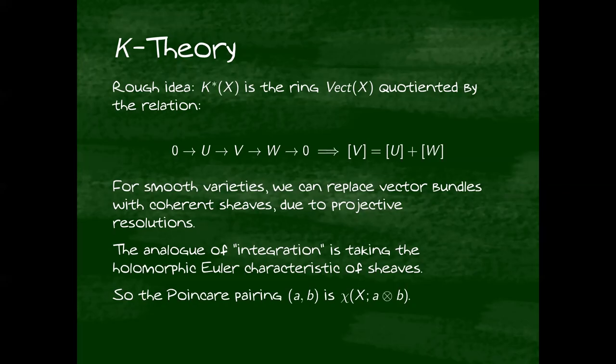That means the Poincaré pairing can be written as the holomorphic Euler characteristic of the tensor products in the same way that you can write it by integration in cohomology. For those already familiar with K-theory, I have omitted some things. This doesn't make the distinction between algebraic or topological K-theory, and I've only really defined K_0. But for all of the spaces we're considering, flag varieties, these distinctions do not matter.